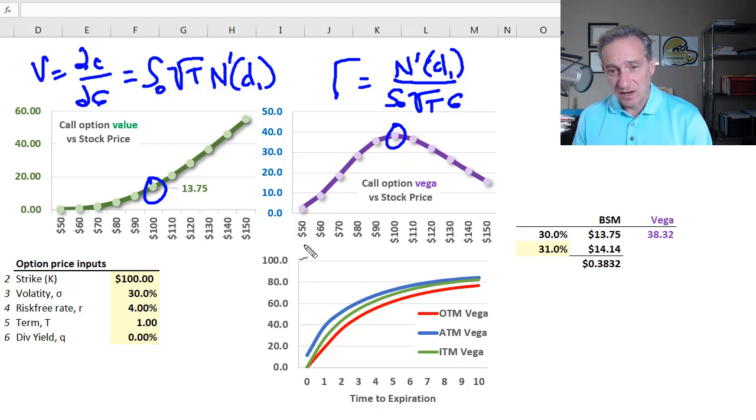I'm taking this option at the money when the volatility is 30%, the Black-Scholes-Merton price is $13.75, and my Vega is 38.32. How should we interpret it?